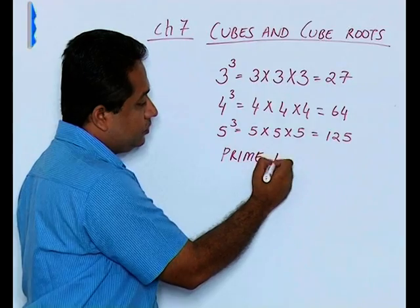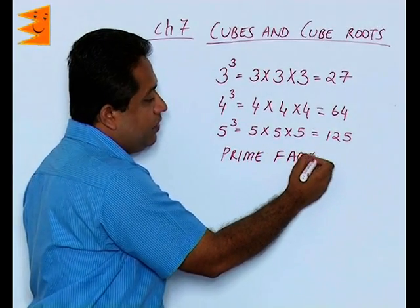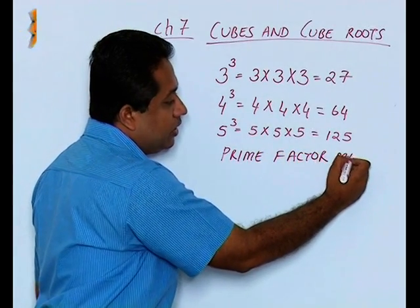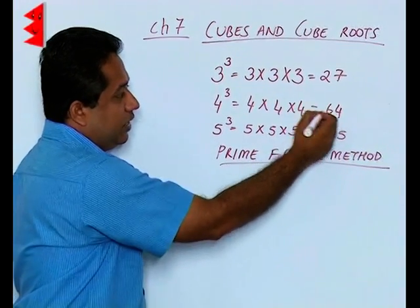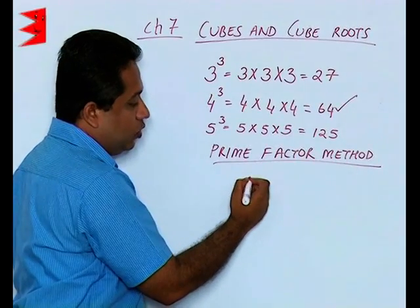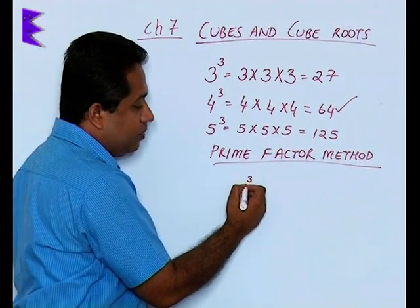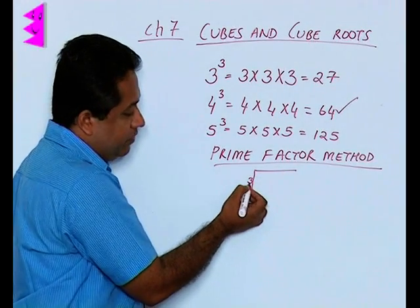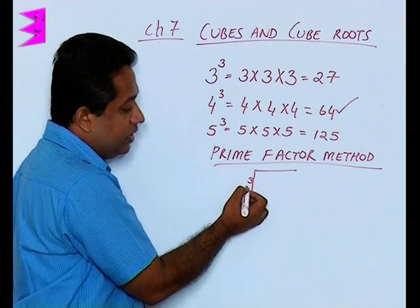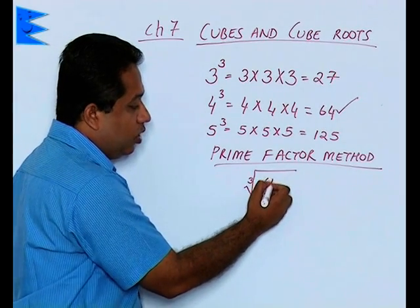To find out the cube root, the easiest way is the prime factor method. Now when we are going to use the prime factor method, we can find out the factors. For example, let us find out the cube root of 64. The symbol for cube root is this - a square root symbol with a small 3 inside.